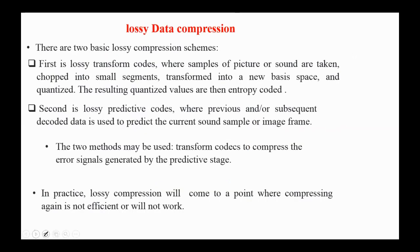Background audio sounds are removed in MP3 and MPEG without creating much difference in the end user experience. There are two basic lossy compression schemes. First, lossy transform codes, where samples of pictures or sound are taken, chopped into smaller segments, transformed into a new basis space, and quantized. The resulting quantized values are then entropy-coded. Second is lossy predictive codes, where previous and/or subsequent decoded data is used to predict the current sound sample or image frame. The two methods may be combined, using transform codes to compress the error signals generated by the predictive stage.